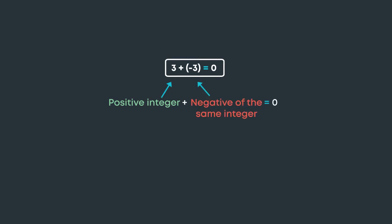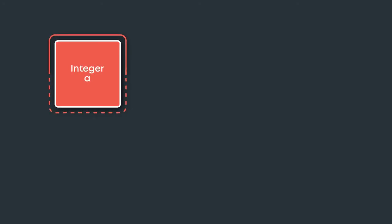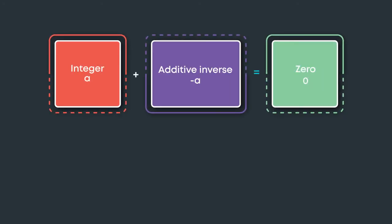And minus three plus three is equal to zero. What do we see? A positive integer plus the negative of the same integer is zero. A negative integer plus the positive of the same integer is zero.